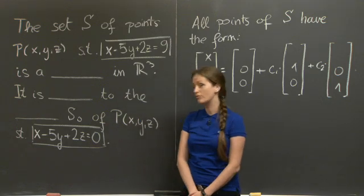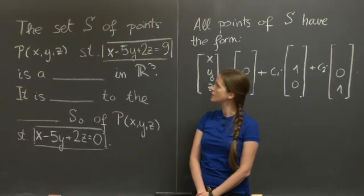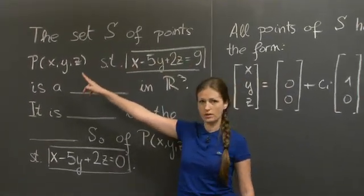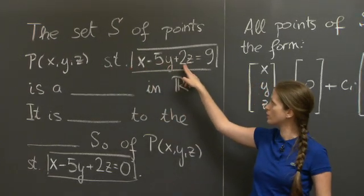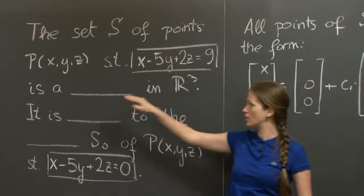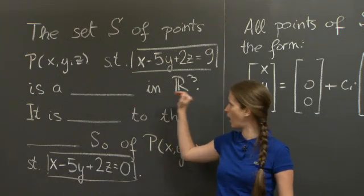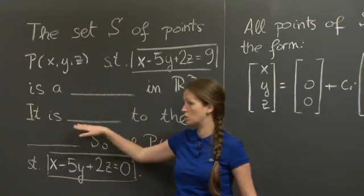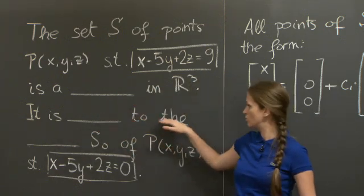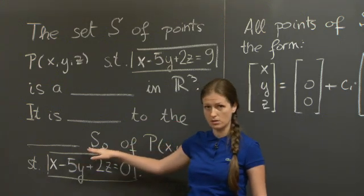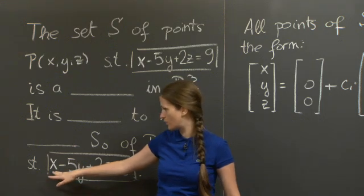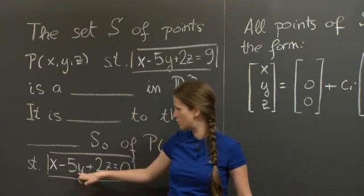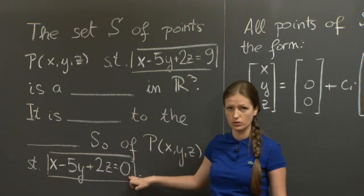The problem is fill the blanks type, and it says the set S of all points with coordinates x, y, and z such that x - 5y + 2z = 9 is a blank in R³. It is in a certain relation to the other blank, S₀, of all the points with coordinates x, y, and z that satisfy the following linear equation x - 5y + 2z = 0.